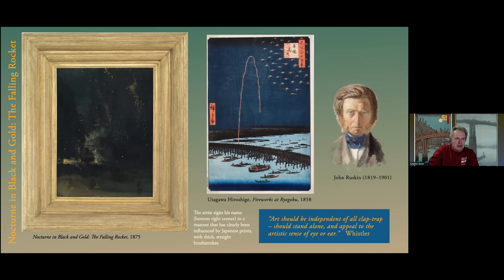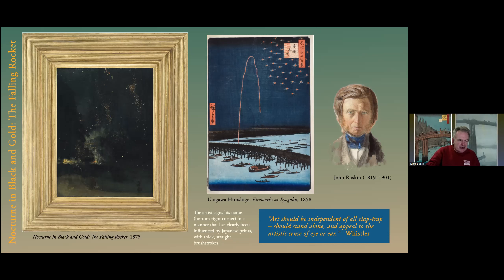Whistler also used Oriental characters, basing his own monogram on Japanese script. He was advocating at this stage for art for art's sake — art not connected with the grandiose subject matter of the Royal Academy or classical subjects. He was interested in art which was for beauty alone, and he saw that in Japanese printmaking.